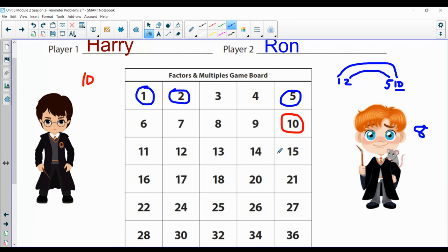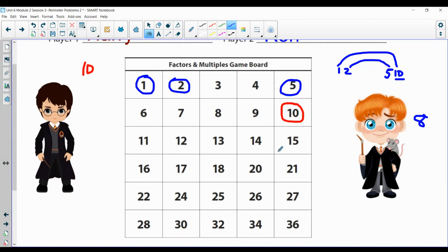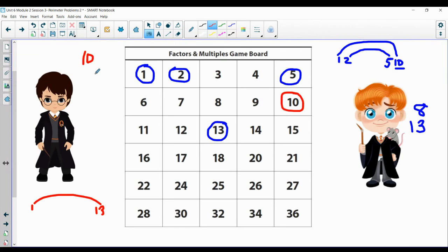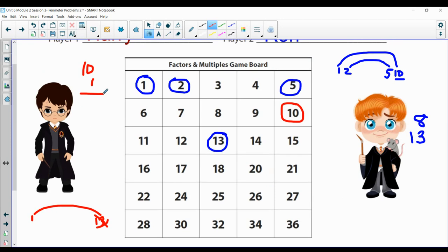So now Ron gets to choose one. Let's go with, he's going to be a little tricky here. Let's go with 13. So Ron gets 13 points. Harry's got to do the rainbow factor for 13. 1, 13. 2, nope, it's not an even number. Oh my gosh, it's a prime number. So he only gets the one here because 13 is already taken for Ron. So Harry's up to 11 points now. Ron has 21. He's in the lead so far.